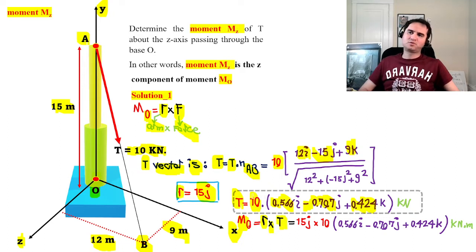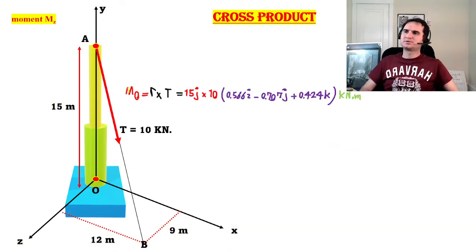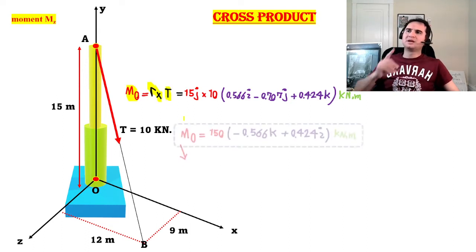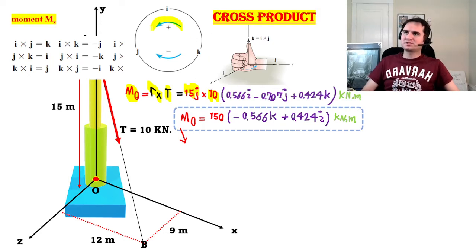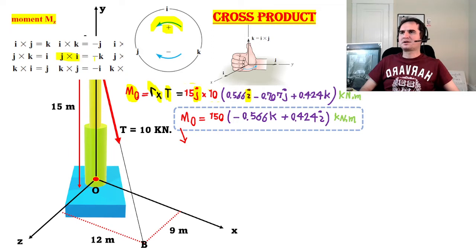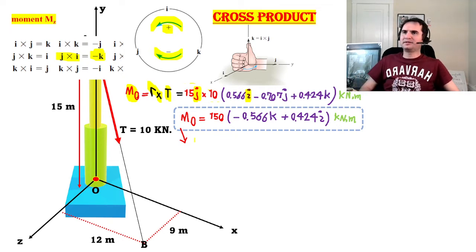The moment about O is R cross product T, replacing with 15j for the displacement from O to A. So moment about O = R × T = 15j times 10 times the unit force vector. From the cross product rule, counter-clockwise rotation is positive. j × i is a clockwise rotation — that gives a negative k.